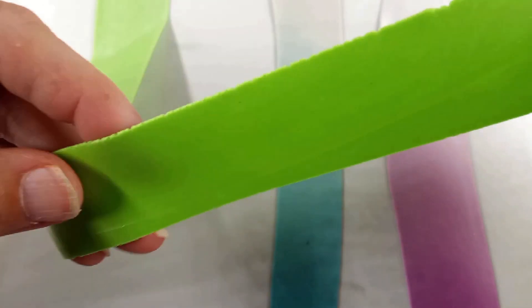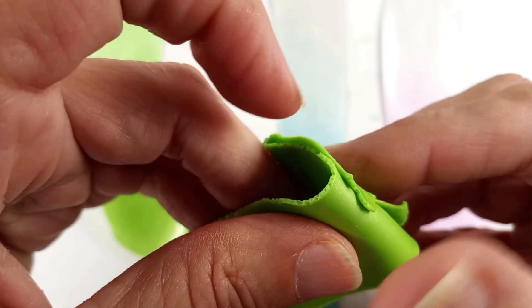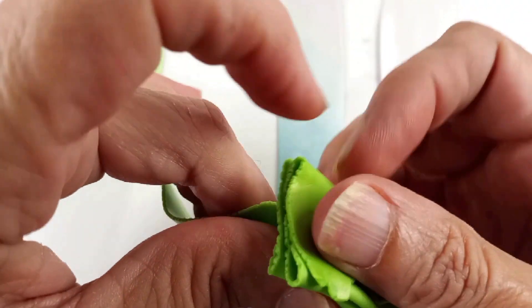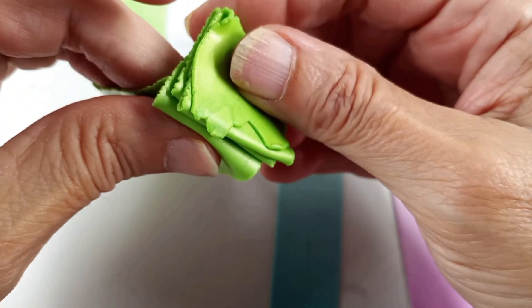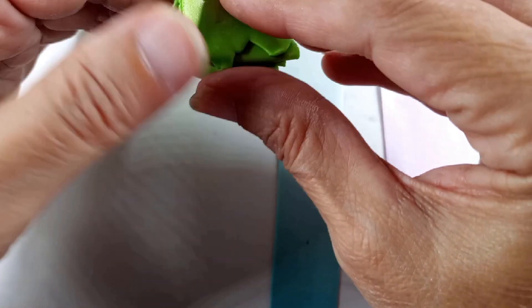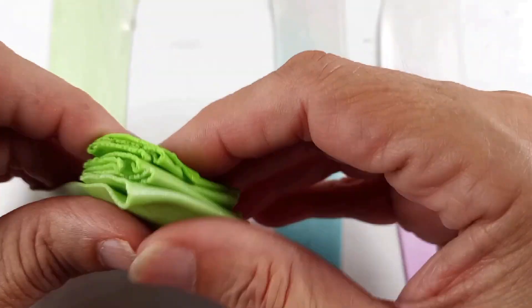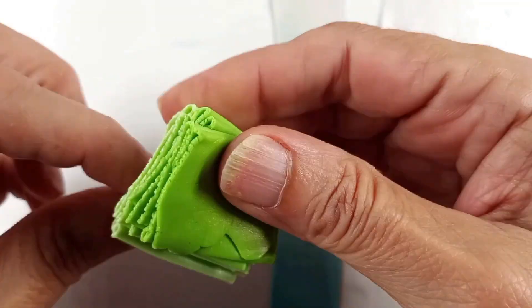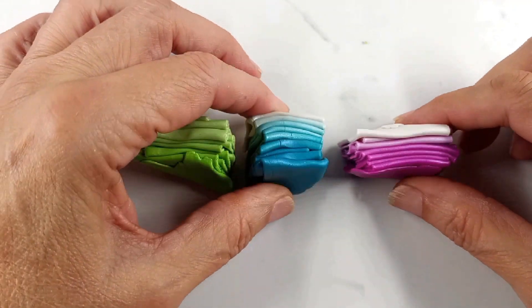So here's our Skinner blends rolled out really thin and what I want to do is accordion them. So we're just going to fold them over on each other back and forth. There are our three colors blended and stacked.